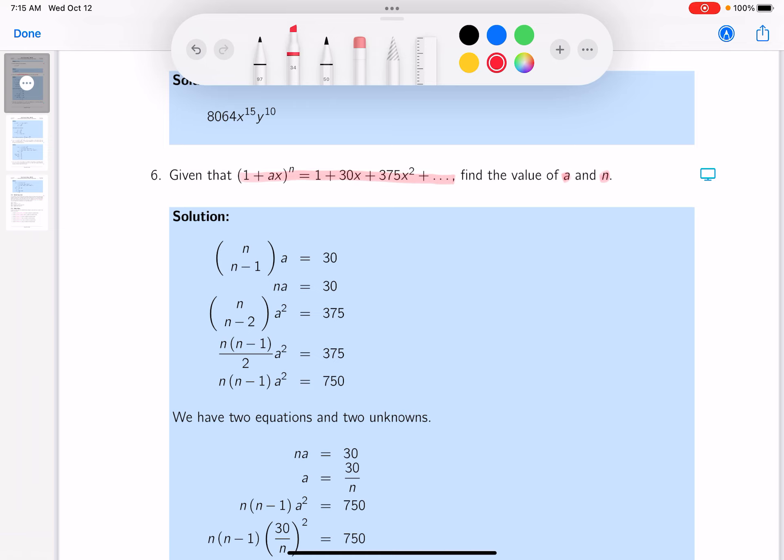All right, so let's take a look at this, and the first thing I'll do is just expand it using the binomial theorem. I need those first three terms, so it's going to be n choose n, and then it'll be 1 to the nth power, and then ax to the 0 power.